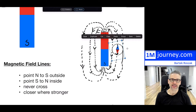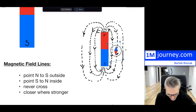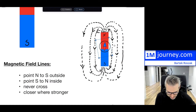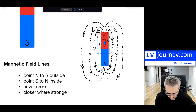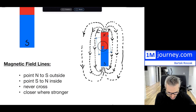Now, inside of the magnet — if it were possible to measure this through — it actually goes in the opposite direction. As you're going through inside the magnet, it aligns from the south to the north, so it would be pointing in that direction.